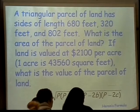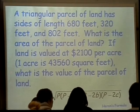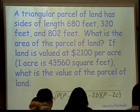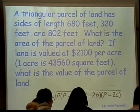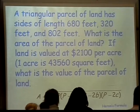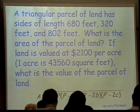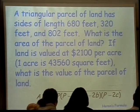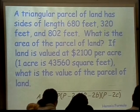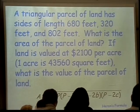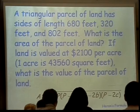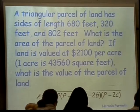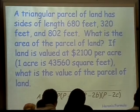They're both equivalent formulas. We give you the one that's in your book. So I have a triangular parcel of land. It has sides of length 680 feet, 320 feet, and 802 feet. What is the area of the parcel of land? So that's question one. And question two is, if land is valued at $2,100 per acre and an acre is 43,560 square feet, what is the value of the parcel that I have?